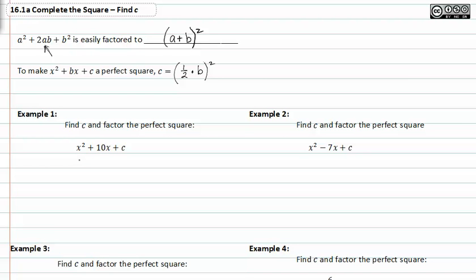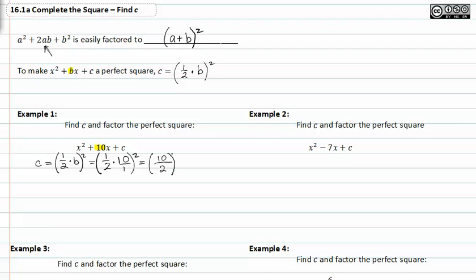Looking at example one, we notice that b is represented by the ten, just like it was b in the generic example. So now if we want to find c, we know that it's one-half b squared. I'm going to take ten and substitute it in for b, so I get one-half times ten over one, raised to the second power. Multiplying straight across: one times ten is ten, and two times one is two, squared. This reduces to five squared, and we know five squared is twenty-five.